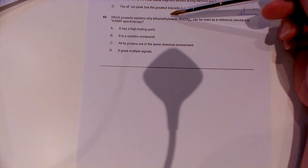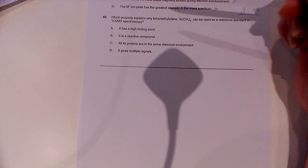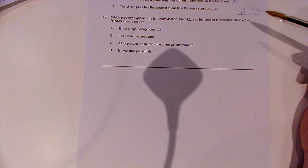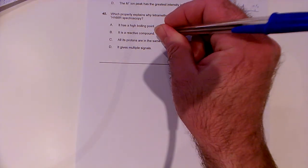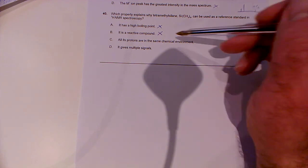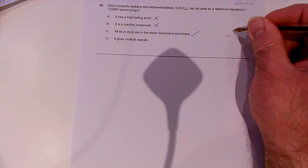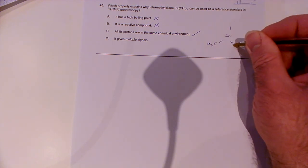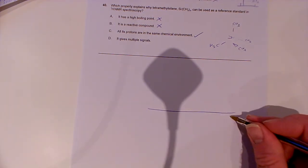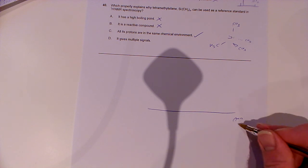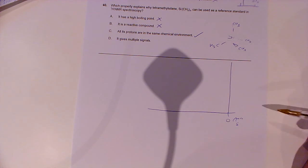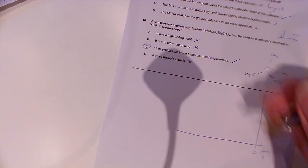And then number 40. Which property explains why tetramethylsilane can be used as a reference standard in proton NMR spectroscopy? It has a high boiling point. No, it doesn't. It has a low boiling point, which is good, because we can evaporate it away from our sample easily later. It is a reactive compound. No, it's not. It's a very unreactive compound, which is good. It doesn't react with the compound we want to do the NMR of. All of its protons are in the same chemical environment. That is true, because it's Si(CH3)4, like that, and it's got perfect symmetry. The nice thing about this is when we've got our NMR spectrum down at, in PPM, or delta, whatever they call it, down at naught, you get a nice, kind of sharp, single peak, because all the protons are in the same chemical environment. It doesn't give multiple signals. So C is the right answer.